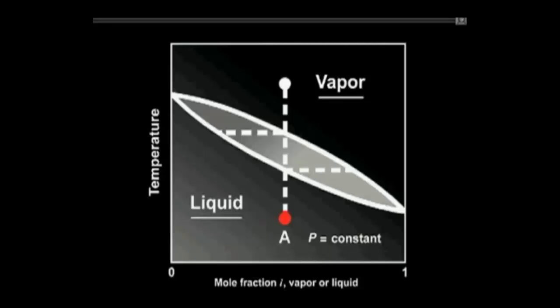A liquid of composition A may be heated at a constant pressure to point B, the bubble point, at which the initial vapor is formed.